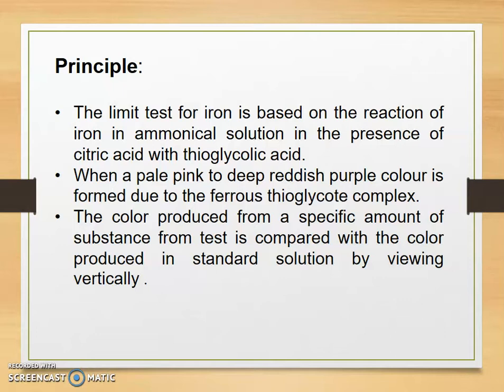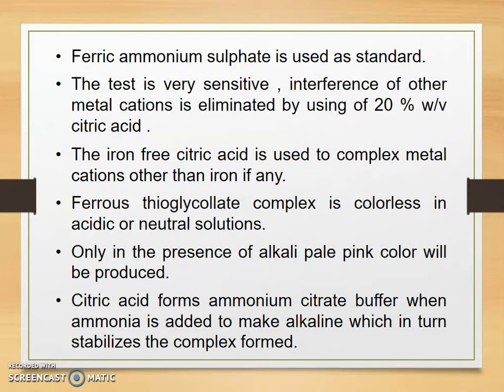We have to identify or observe the color developed, that is pale pink to reddish purple color, with the test solution. Ferrous ammonium sulfate is used as a standard. The test is very sensitive and interference of other metal cations is eliminated by using 20% weight by volume citric acid. The iron-free citric acid is used to complex metal cations other than iron if any.